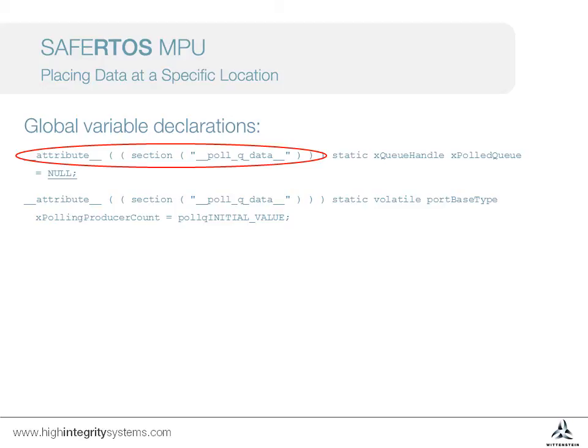The next video briefly mentions some techniques for debugging MPU faults. Next, we'll look at how the map file, which is created by the linker, can be used to check we have allocated our regions correctly.